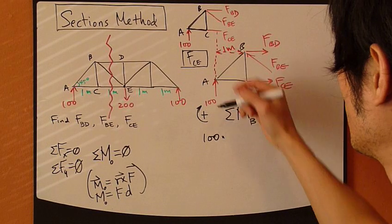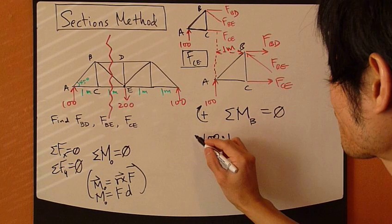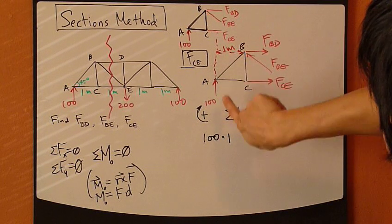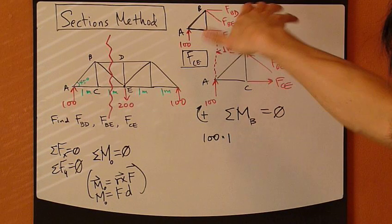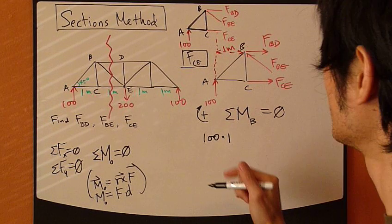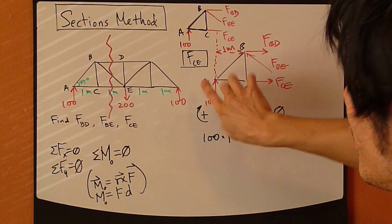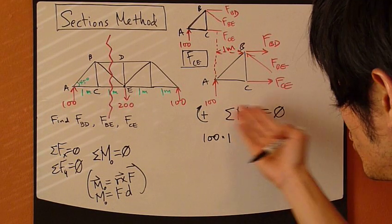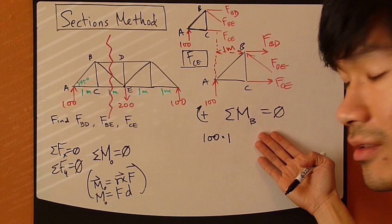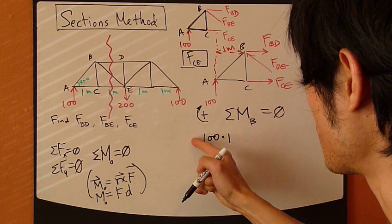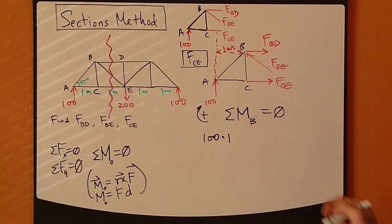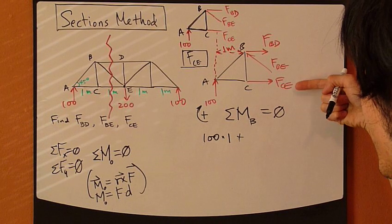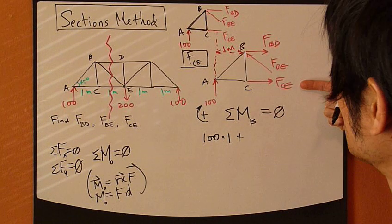So my first moment term is 100 Newton times one meter. Using your right-hand rule, this force goes up and follows the positive clockwise direction, so this moment is positive. The next term is FTE — that's the unknown — and FTE will also create a moment about point B.